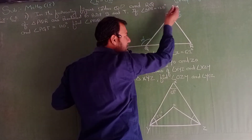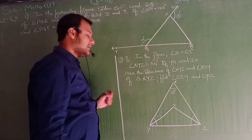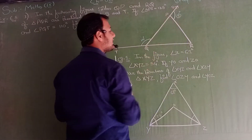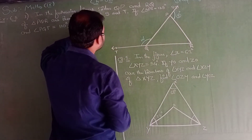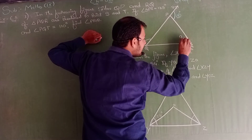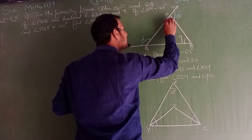यह angle जो triangle के angle के बाहर का होता है, जिसे line को extend करके बनाया जाता है, उसे exterior angle कहते हैं — which is what we call exterior angle. So these two are our exterior angles. We need to find angle PRQ. These two are exterior; the others are not.